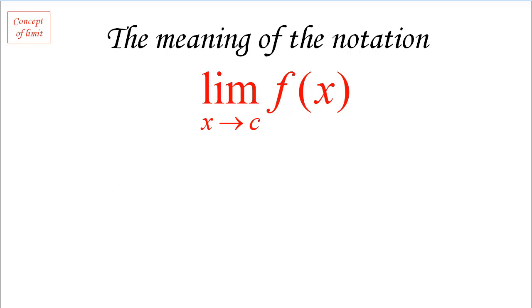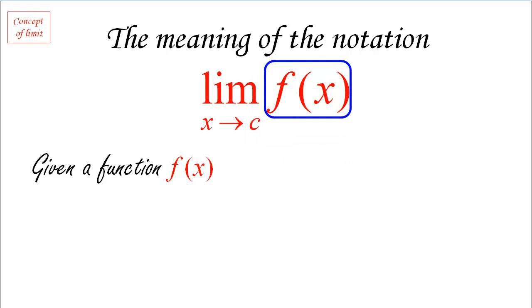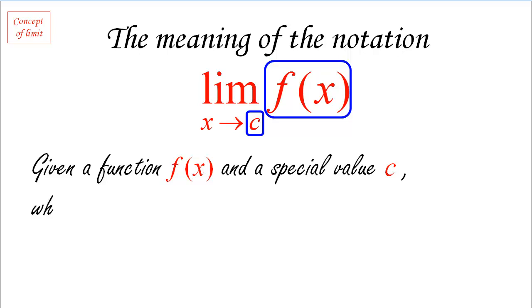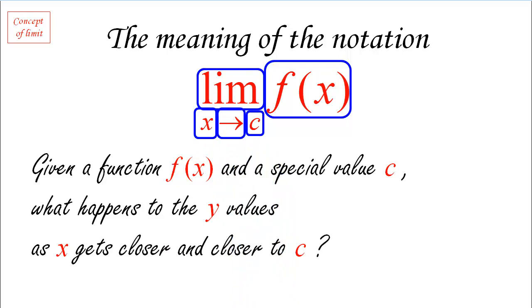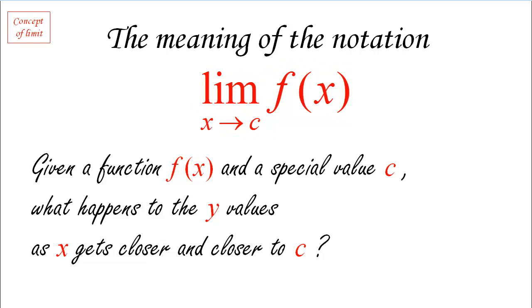Let's focus on the notation and clarify what it actually means. Given a function f of x and a special value c, we ask: what happens to the y-value — represented by the function — as the x-value gets closer and closer to c? That's what the notation 'limit as x approaches c of f of x' represents, where the arrow means x is approaching c. So what we're asking is what's going on with the y-value as x is approaching this special value c.